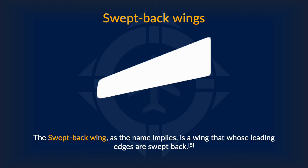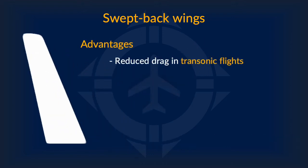Last, but certainly not least, we have the swept back wing. As the name implies, it is a wing whose leading edges are swept back. Aside from looking pretty cool, the swept back wing has just one advantage: its reduced drag in transonic flights. One may ask why you would even want this wing if that is the only advantage, but it turns out that this small characteristic is very, very helpful.